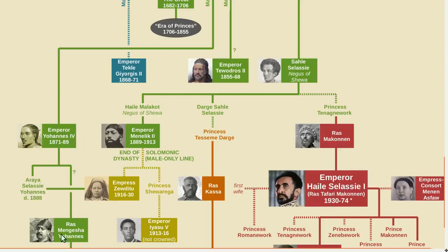So after Johannes IV, there was a power struggle. Ras Mangesha Johannes, previously known as the nephew of the emperor, had it claimed after the emperor died that he was actually the emperor's son. However, Menelik II, a descendant of the powerful Shiwa branch of the Solomonic dynasty, won the power struggle and became emperor.